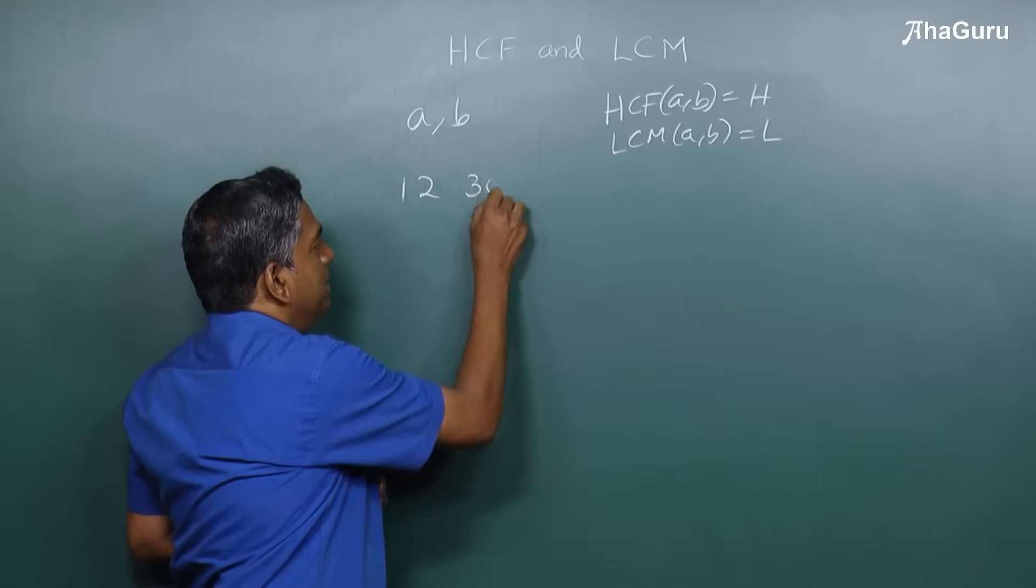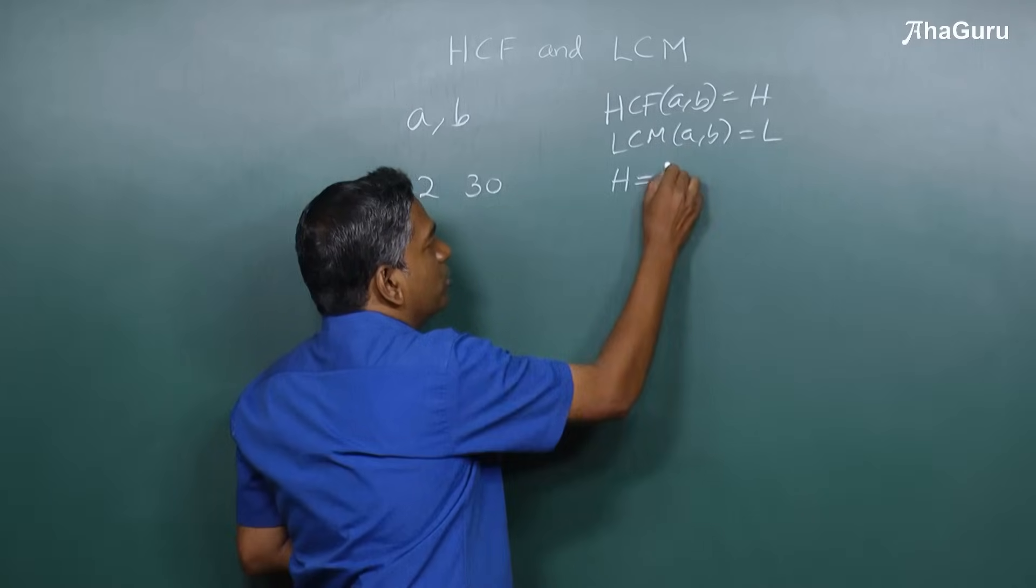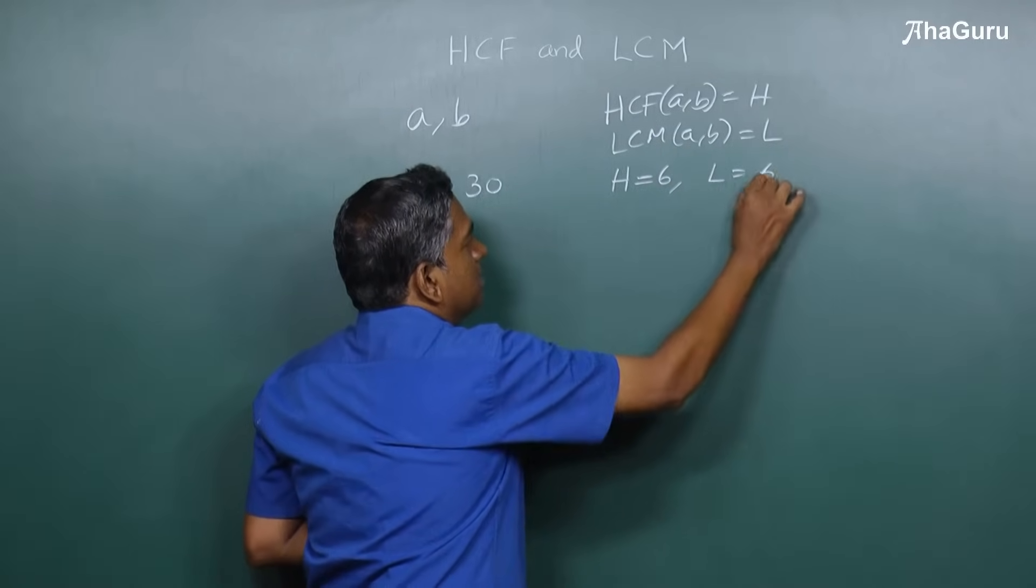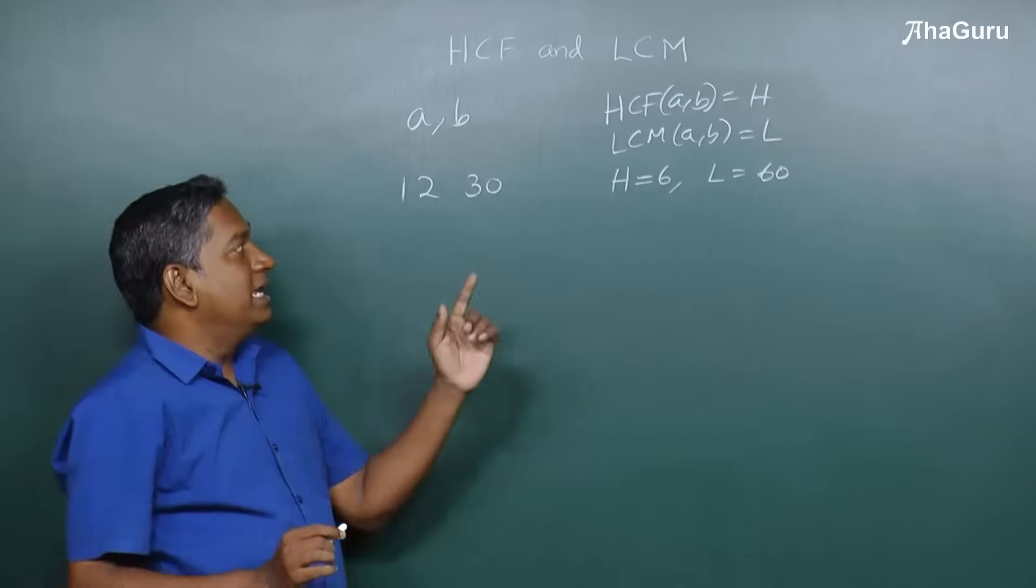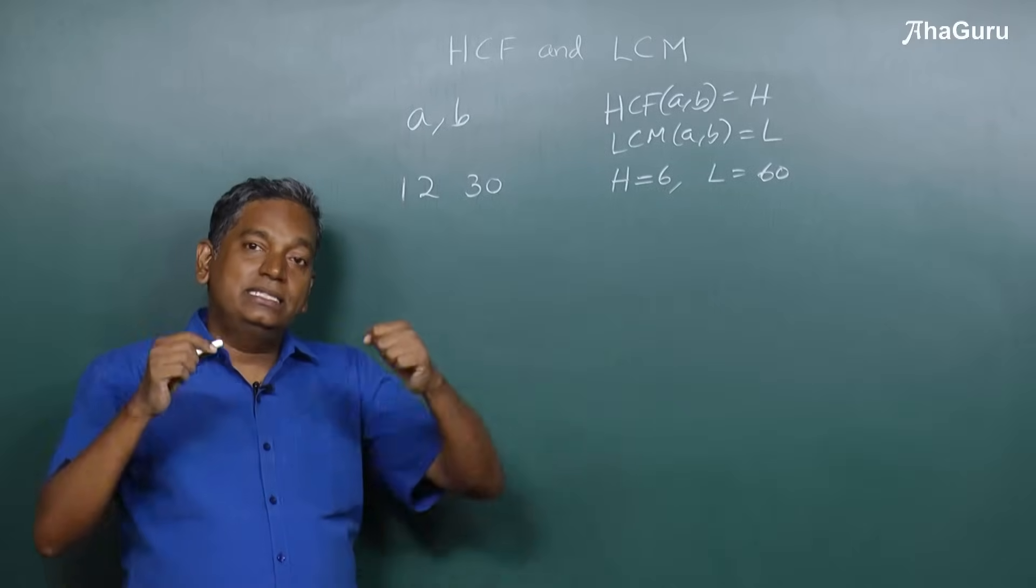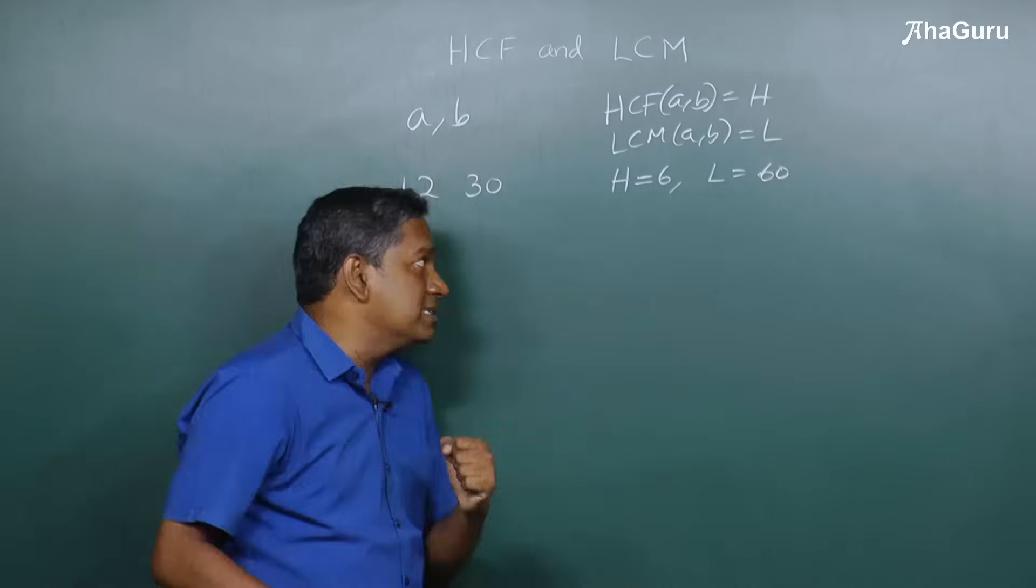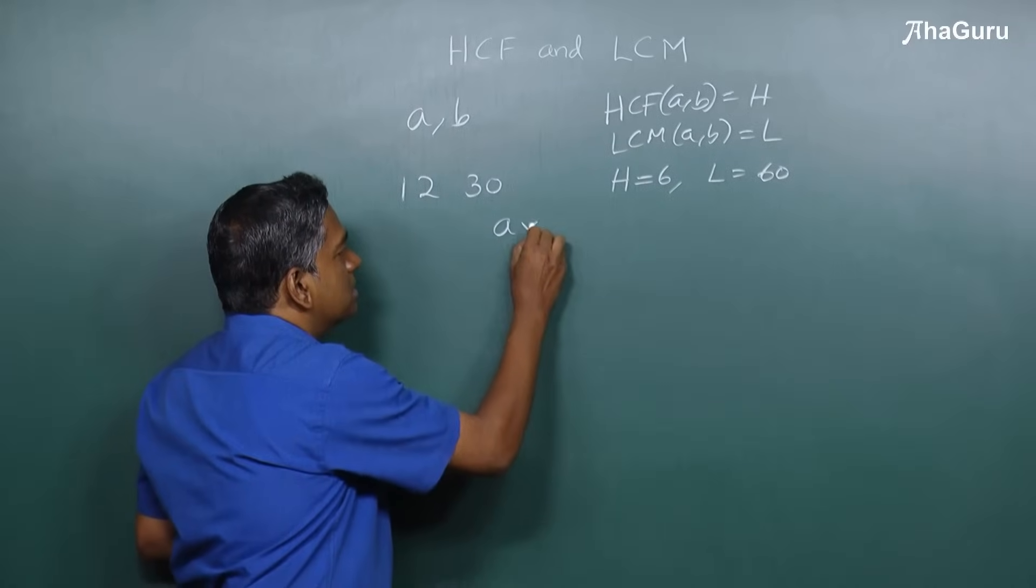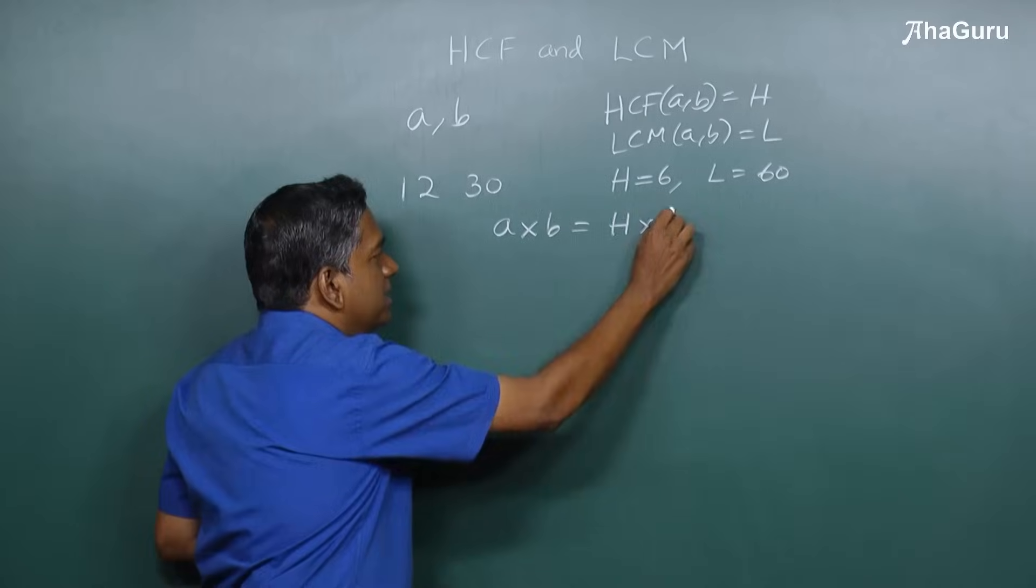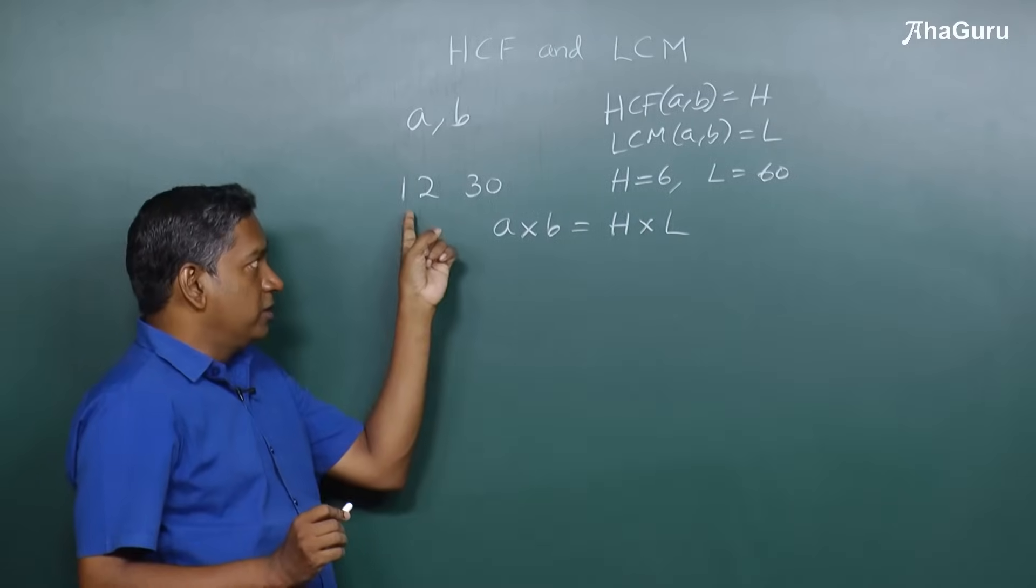Let's say A is 12 and B is 30. We know that the HCF can be calculated to be 6 and the LCM can be calculated to be 60. Now we know a property that connects the numbers and the HCF and LCM, which is that if you multiply the two numbers you get the product of the HCF times LCM.